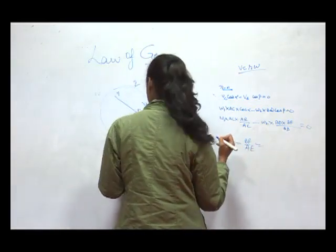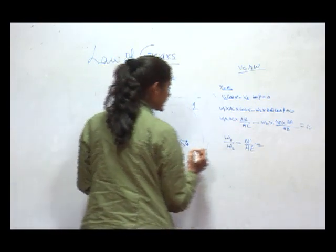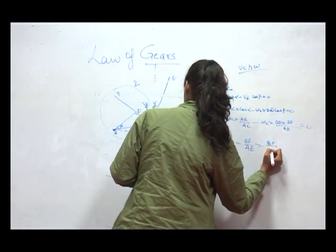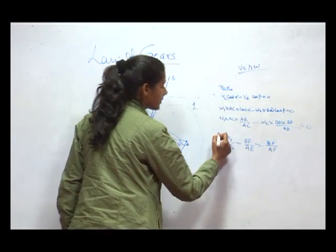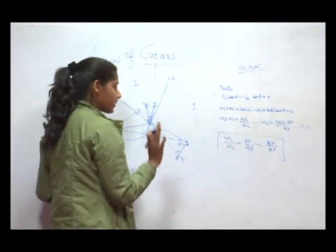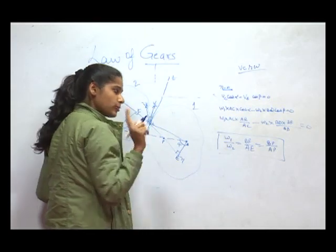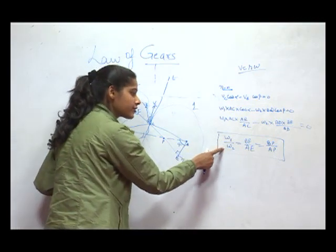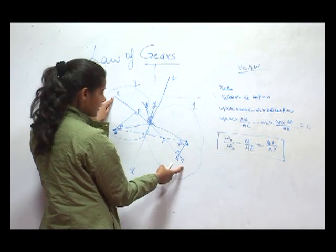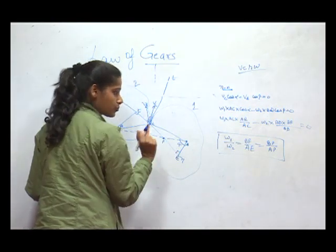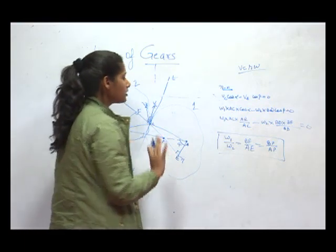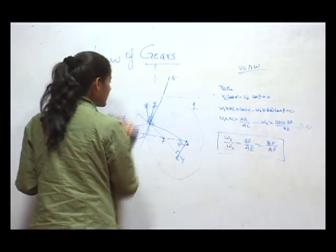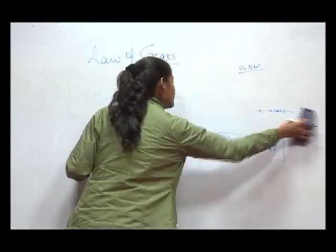This can be written as ω1/ω2 equals BP/AP, where P is the point where the normal cuts the line of centers. This is our Law of Gearing — it states that both gears will have smooth motion only when the ratio of their angular velocities is constant, and this is constant only when the common normal passes through the pitch point P.